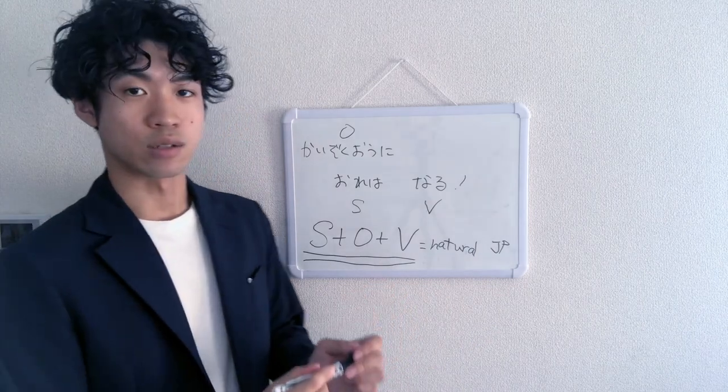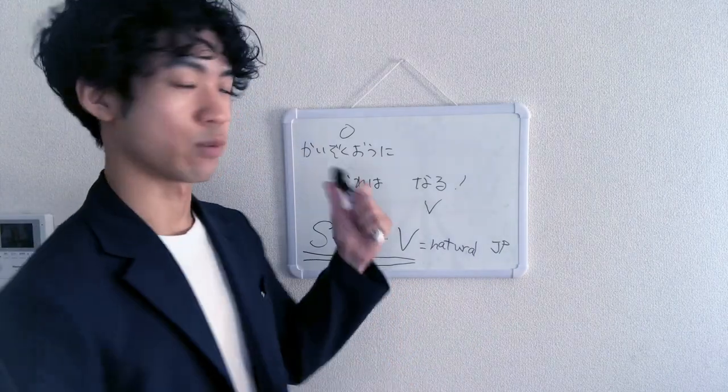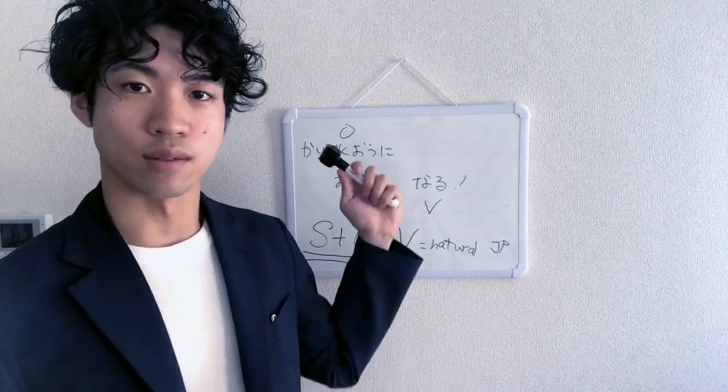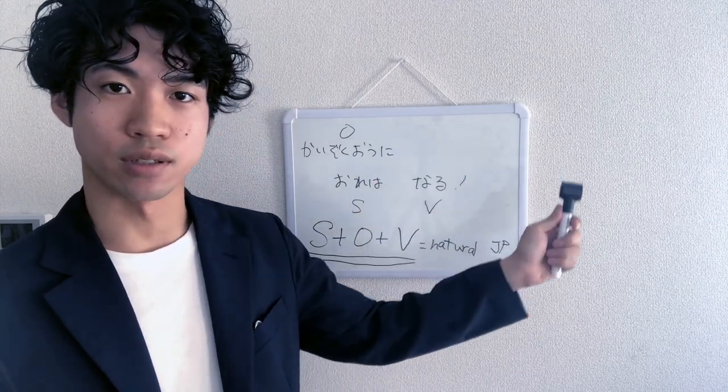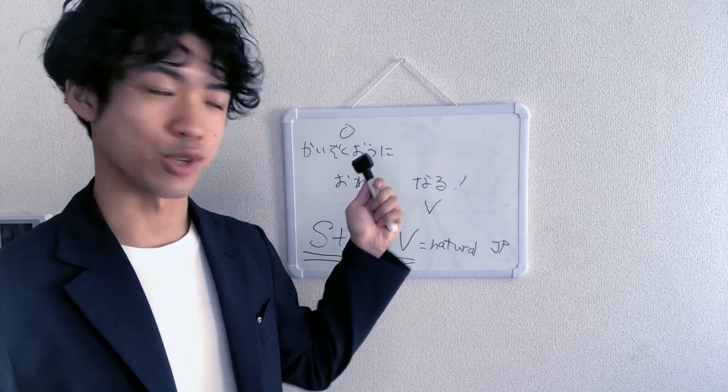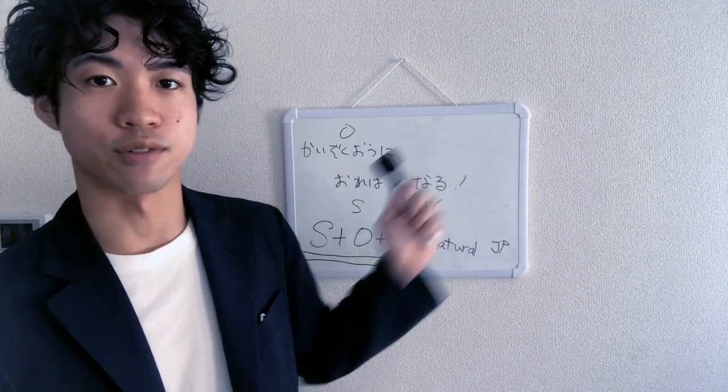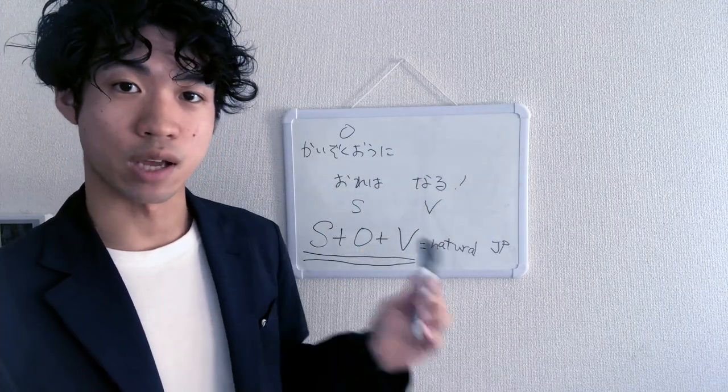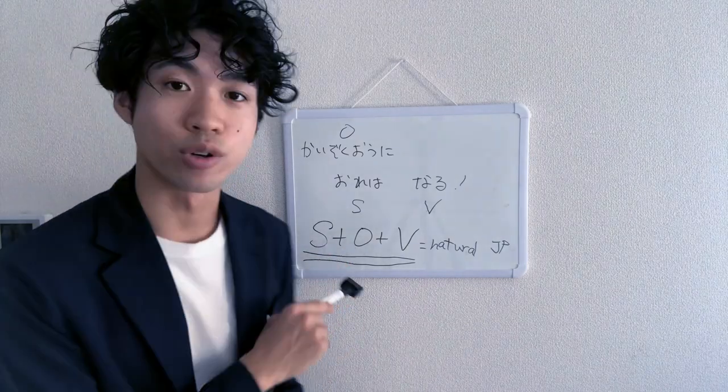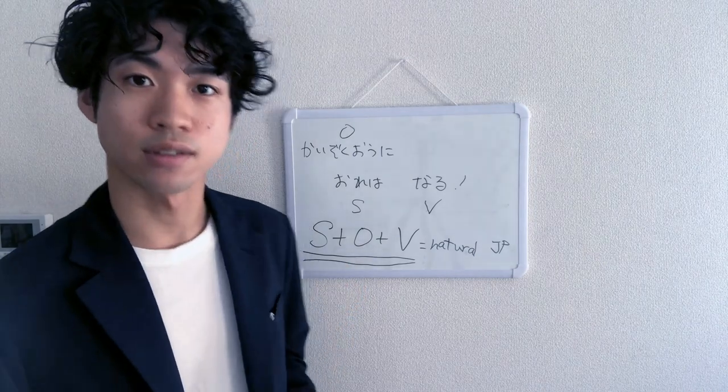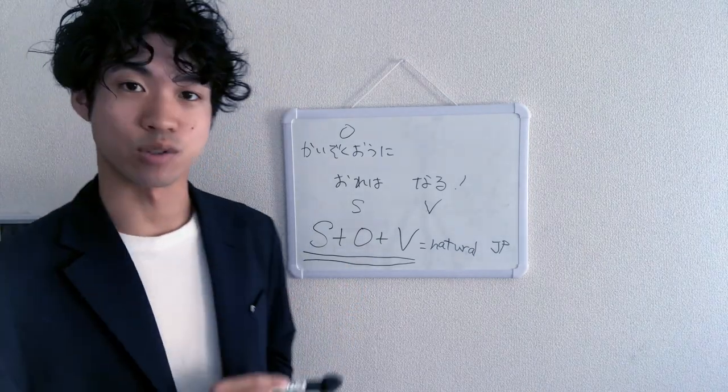In English, it is SVO, so subject comes first, and verb, and the object. So I drink coffee, ready? I subject, drink verb, coffee object. But in Japanese, it's going to be 私は, コーヒーを object, 飲みます verb. So this is a natural one.